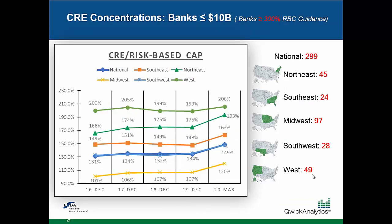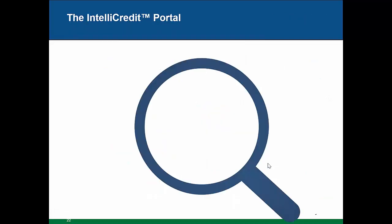On CRE concentrations, these represent the number of banks in each region that are under $10 billion but have over the 300% guidance. The Midwest has the most. If you are one of those banks or anywhere near the 300% guidance, understand that regulators have been pretty clear — they don't mind you being over the guidance, but you should fully expect a much more rigorous and demanding exam cycle. We get to run our banks the way we want to, but we should not be surprised to be examined more rigorously with higher concentrations. It's a reasonable request, and we shouldn't be caught off guard.